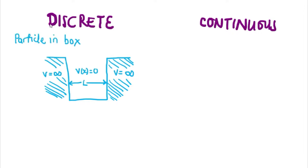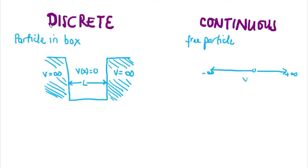On the other side, we have the continuous energy level, which involves a free particle in space. For the free particle in space, the potential energy from negative infinity to positive infinity in terms of x is equal to zero. This implies that there are no discrete energies in this free space where the particle is positioned.